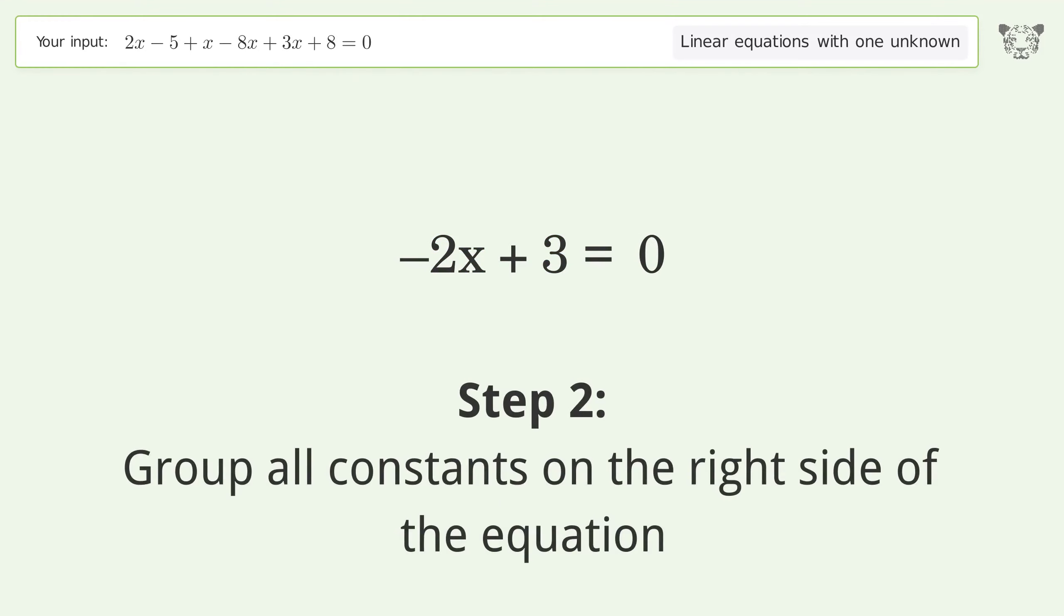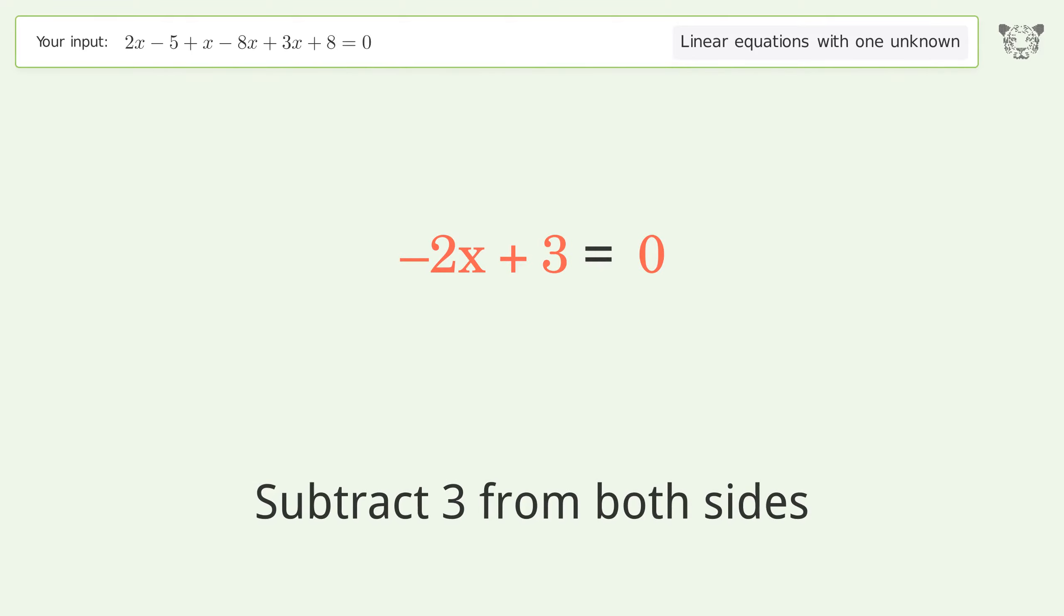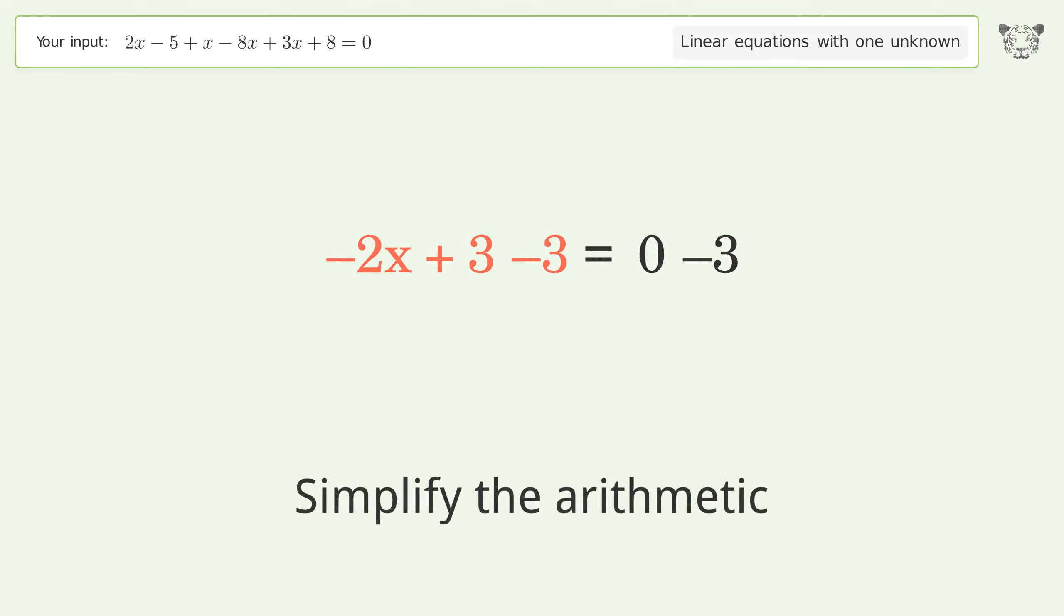Group all constants on the right side of the equation. Subtract 3 from both sides. Simplify the arithmetic.